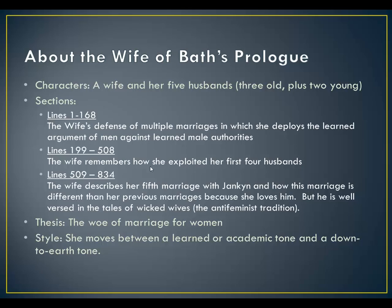She's basically taking the academic argument that men give. During this time period, women weren't allowed to get an education in any way — it was frowned upon and it wasn't allowed. So she had to build her argument on the argument of men, looking at the academic argument against the male authorities. Then lines 198 through 508: the wife remembers how she exploited her first four husbands, and how she exploited them for her own benefit.